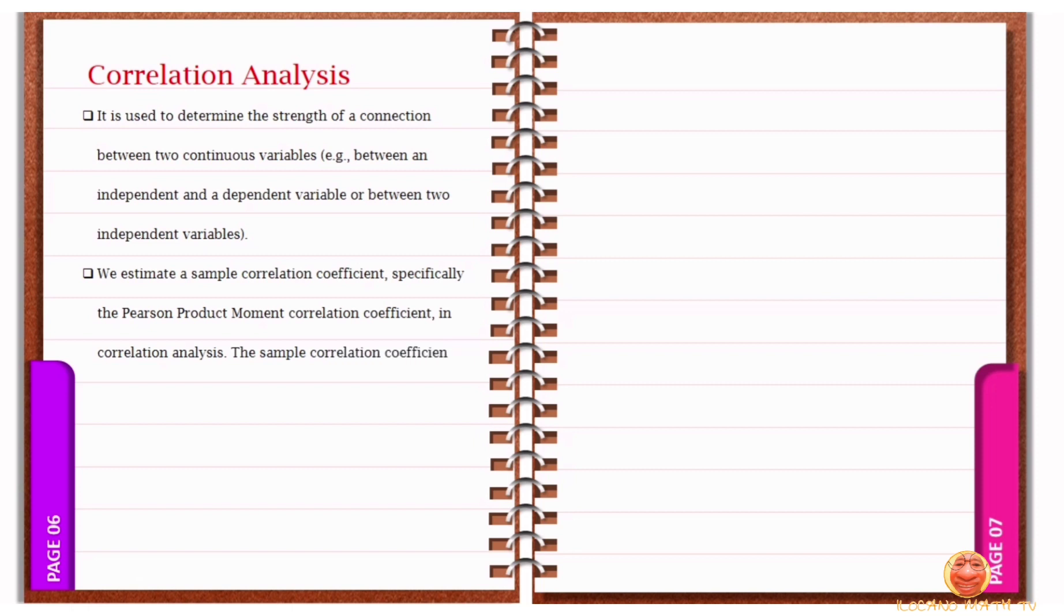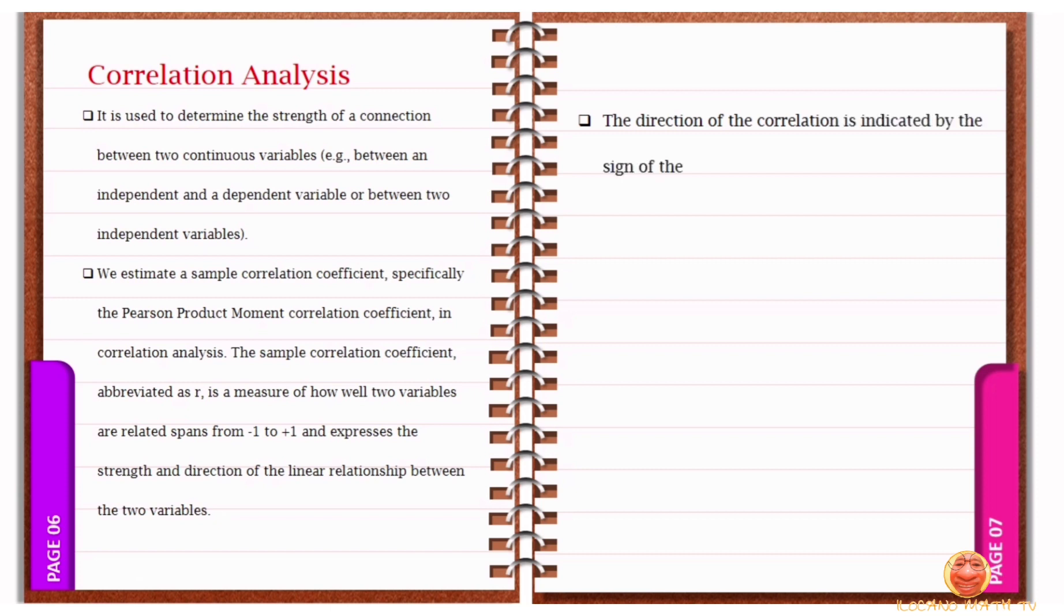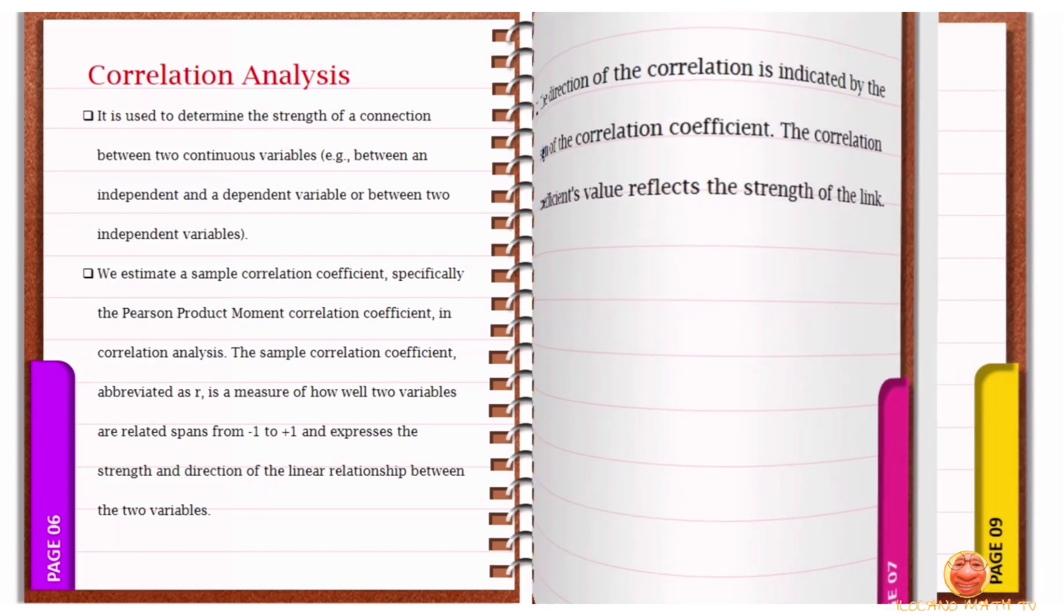The sample correlation coefficient, abbreviated as R, is a measure of how well two variables are related, spans from negative 1 to positive 1, and expresses the strength and direction of the linear relationship between the two variables. The direction of the correlation coefficient is indicated by the sign of the correlation coefficient. The correlation coefficient's value reflects the strength of the link.